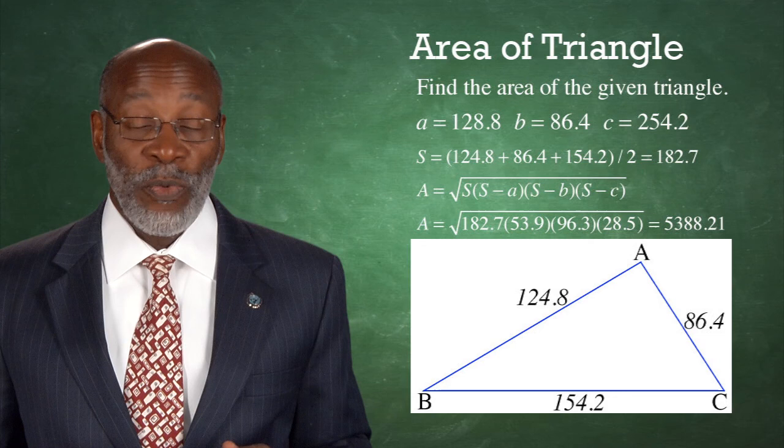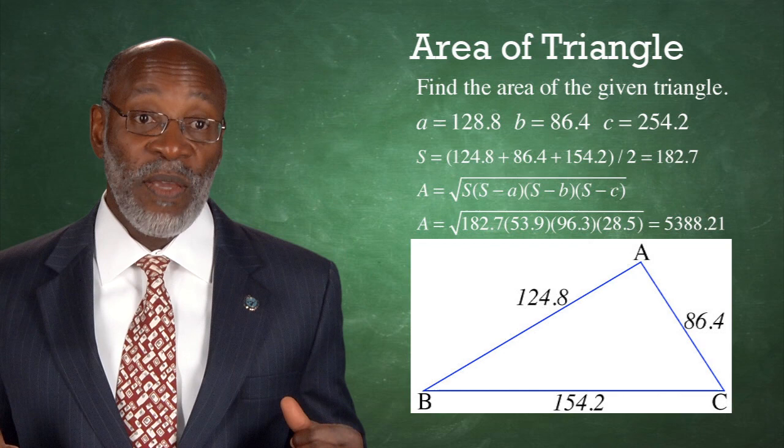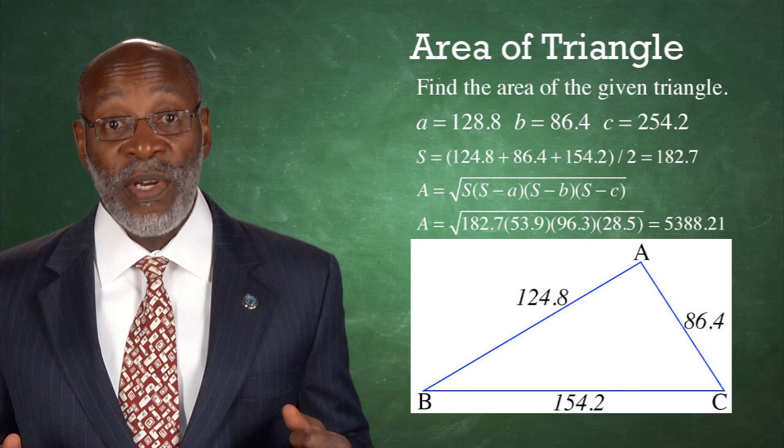So we just apply Heron's rule. Area is equal to the square root of S times S minus A times S minus B times S minus C. And we get that the area is equal to 5,388.21 square units.